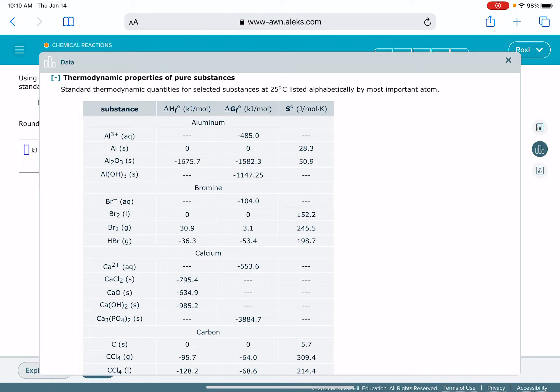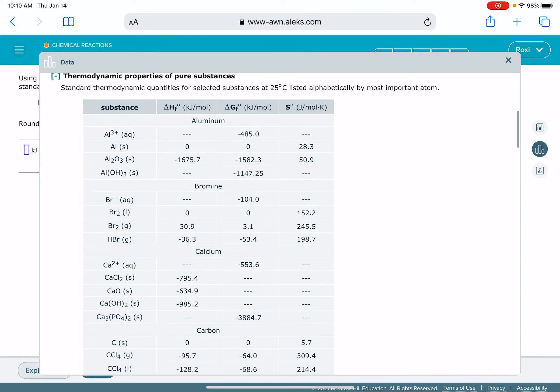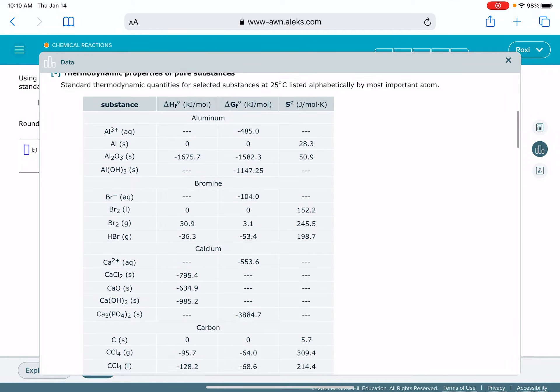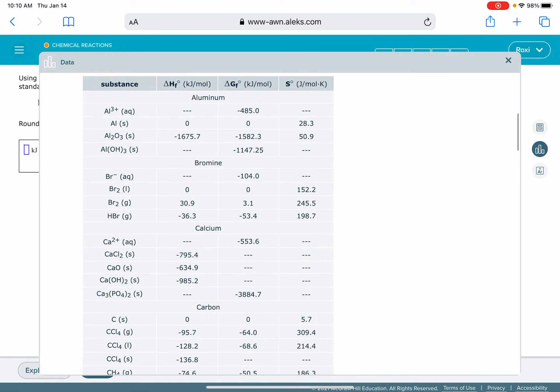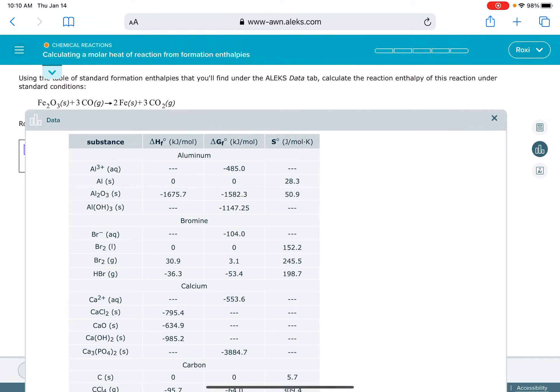Notice that the delta H of formation values are in the very first, well actually it's the second column in this data table, and it's in units of kilojoules per mole. So what we need to do is go through this data table and find the delta H of formation value for all of the reactants and products in this equation.